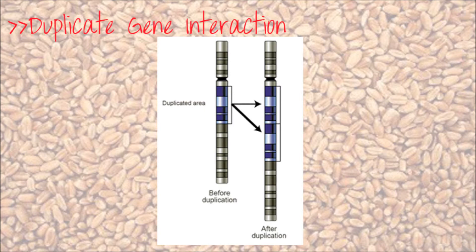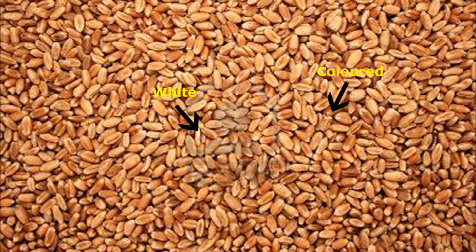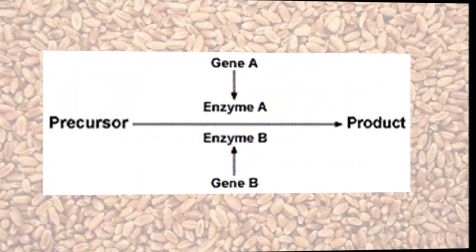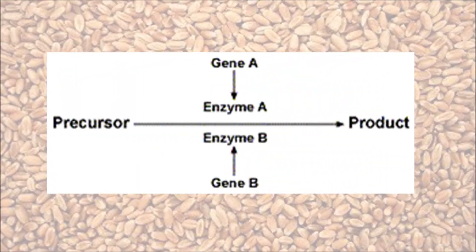The phenotype ratio is very easy to remember: 15 to 1. A common example of duplicate gene interaction is wheat kernel colour. There are two colours of wheat kernel that can be produced — coloured, which is dominant, and white, which is recessive. Since duplication has occurred, two genes, let's say A and B, both have the ability to produce enzymes making the kernel coloured.